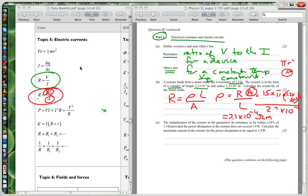Then it says here, the manufacturer of a resistor guarantees its resistance to be plus minus 10% of 1.5 ohms, provided the power dissipation of the resistor does not exceed 1 watt. Calculate the maximum current in the resistor for the power dissipation to be equal to 1 watt.